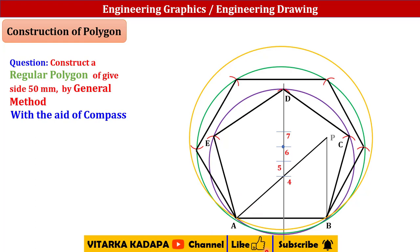Repeat the same procedure: take the distance from A to B on the compass and make arc cuts on the orange circle. From B as center, cut an arc; then from each successive point with radius AB, cut the next arc — continuing until you have arcs at five more positions around the circle.